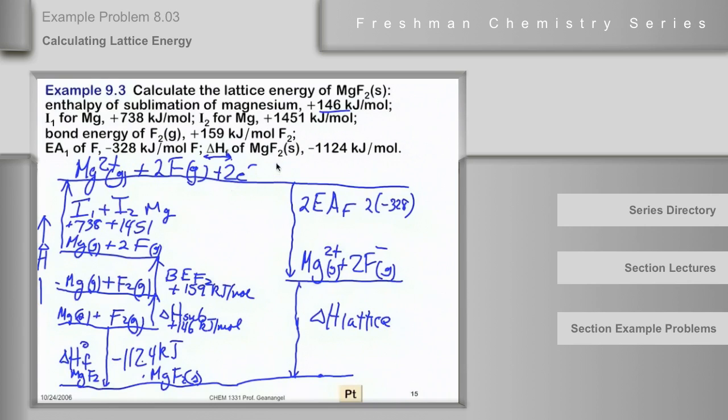So delta H of formation is equal to plus 146, plus 159, plus 738, plus 1451, minus 2 times 328, I'm sorry, that's plus minus 328.